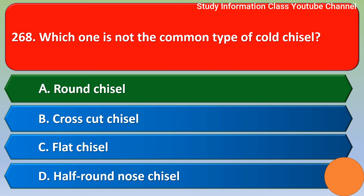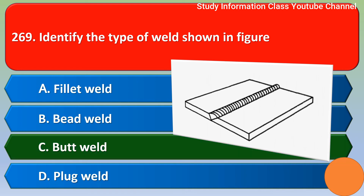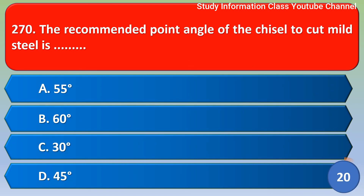Next question: identify the type of weld shown in the figure. Option A: fillet weld, Option B: bead weld, Option C: butt weld, Option D: plug weld. The right answer is Option C, butt weld.